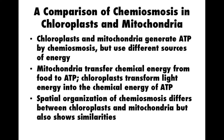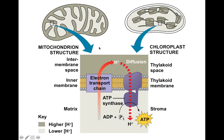Both organelles use those highly convoluted membranes to sequester protons — they keep protons penned up using electron energy to drive ATP synthase. Mitochondria transfer chemical energy from glucose or food molecules to produce ATP, while chloroplasts use light energy to produce ATP. In both, we have an electron transport chain pumping protons somewhere.